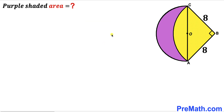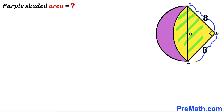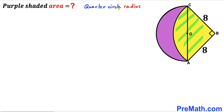Let's get started. Focusing on the yellow quarter circle, we can see that both radii of this quarter circle are 8 units. So the quarter circle radius is equal to 8 units.